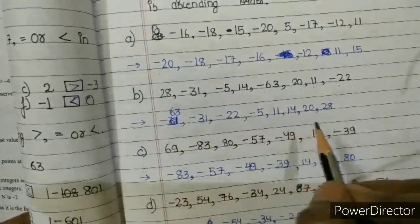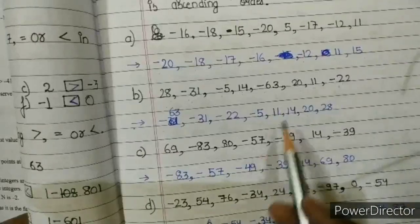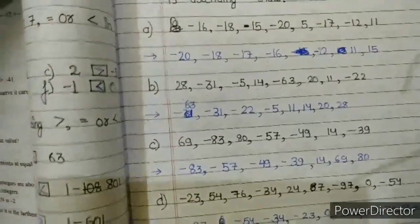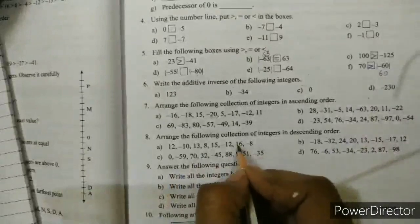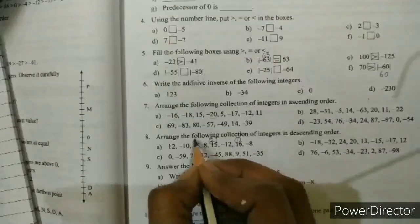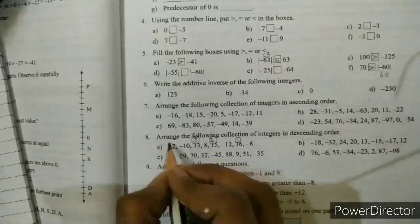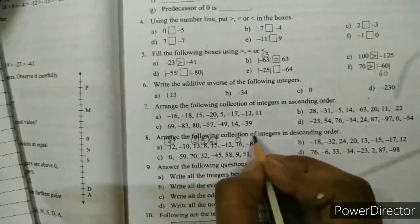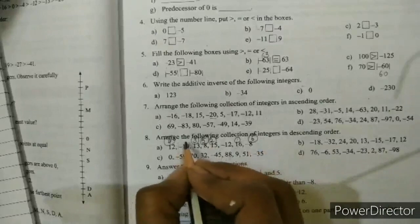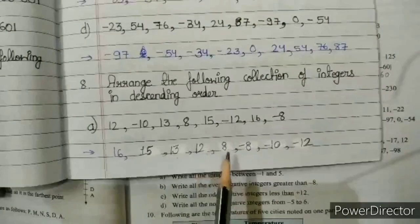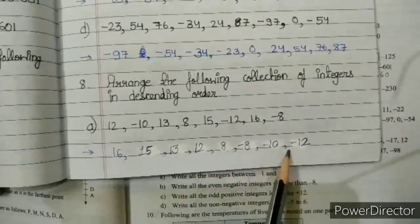For the second set — 28, minus 31, minus 5, 14, minus 63, 20, 11, minus 22 — the smallest number is minus 63, then minus 31, minus 22, minus 5, 11, 14, 20, and last is 28. For descending order of the third set, arrange from biggest to smallest: 16, 15, 13, 12, 8, minus 8, minus 10, minus 12.